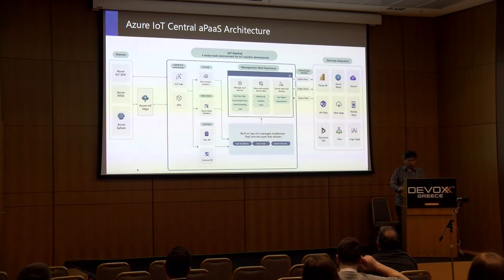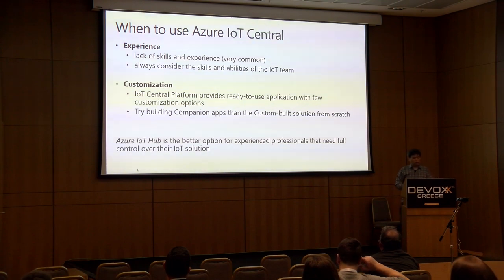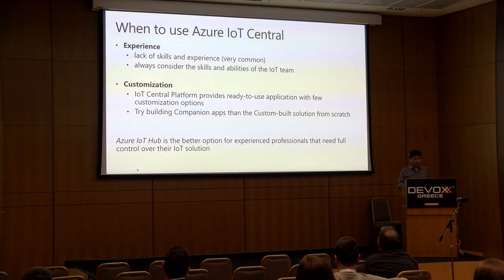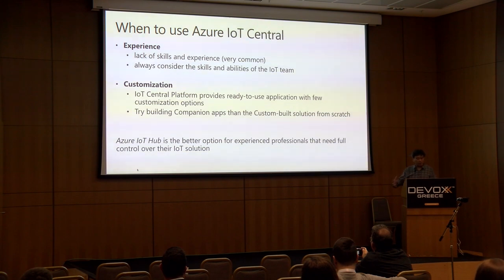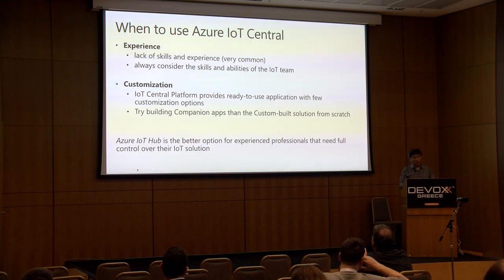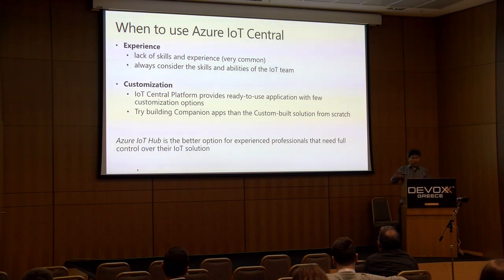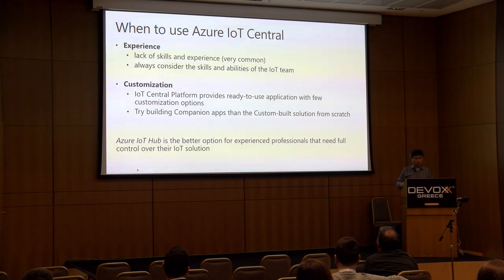When should you use IoT Central? If your team is tasked with building an IoT application but lacks skills and experience — which is very common — it makes sense to start here. If you need more customization you can build a companion app with APIs to use IoT Central as your backend. Azure IoT Hub can also be a better option if your team has experienced professionals who want full control over their IoT solution.